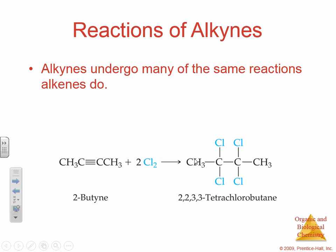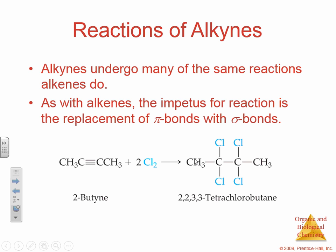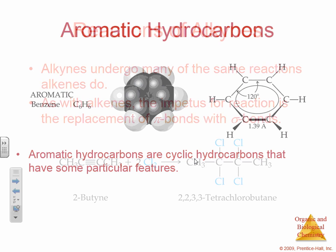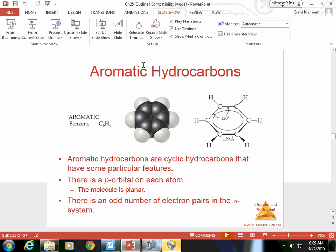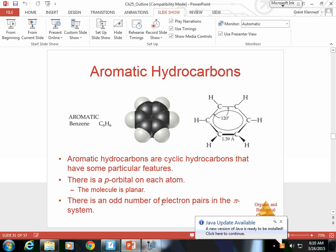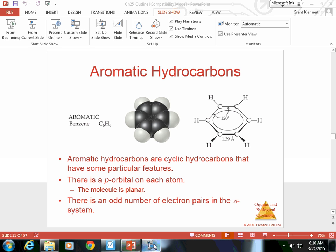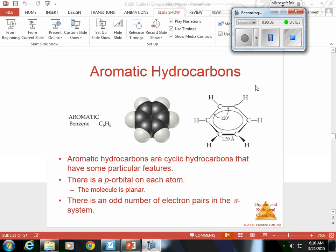Nothing changes with alkynes — alkynes will undergo the same reactions that alkenes do. Again, you're replacing that pi bond with a sigma bond. That is where we're going to stop for section 25.1. We'll pick up our talk on organic chemistry and aromatic compounds in 25.2. Remember: alkanes are single bonds, alkenes are double bonds, and alkynes are triple bonds. This concludes section 25.1.